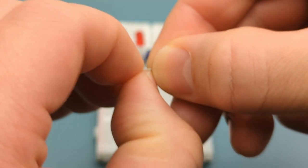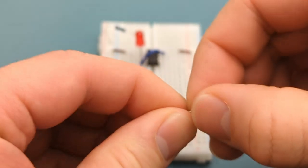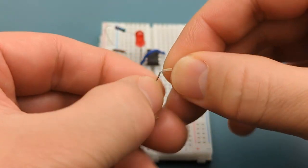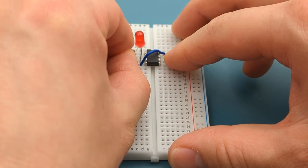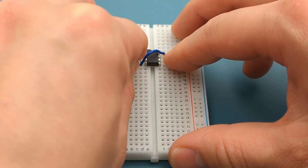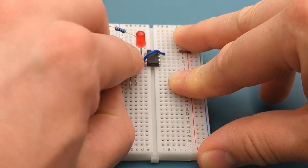Bend the ends of another touch probe. Insert the touch probe into pin 2 or trigger in a few rows below the 555 timer. Make sure the touch probe in pin 2 isn't placed in the same row as the one in pin 1. This pair of touch probes is used to turn on the LED.